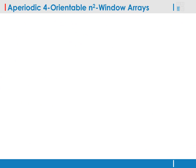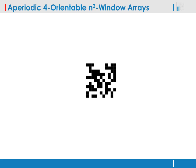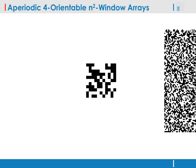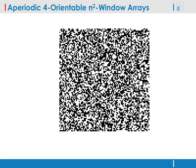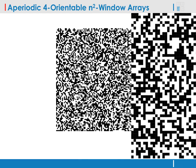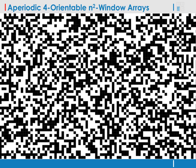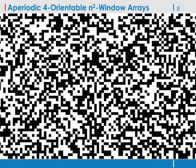One possible design of the uniform marker fields is based on aperiodic, four-orientable, and square window arrays. These window arrays are checkerboard patterns where every n-by-n window is unique, including all four of its possible rotations. Our paper presents a genetic algorithm for synthesis of such window arrays.